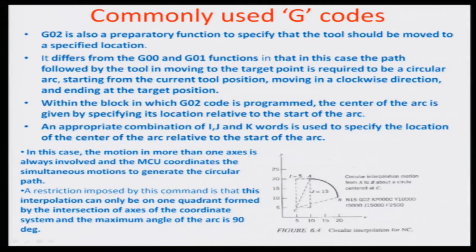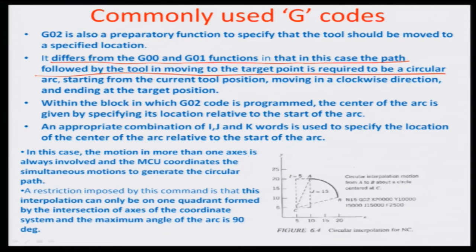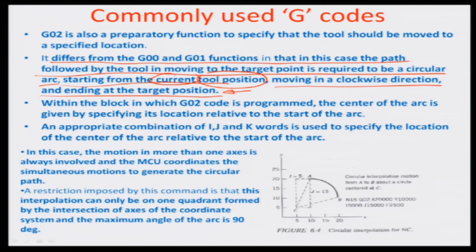Looking at this particular preparatory function when we are executing it, it differs from the G00 and G01 function in that in this case the path followed by the tool in moving to the target point is required to be a circular arc, starting from the current tool position, moving in the clockwise direction, and ending at the target position. What we now need to mention is the current tool position and the target position, so that the arc can be defined in terms of a central radius.